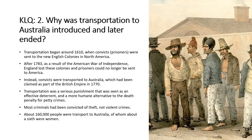After 1783, as a result of the American War of Independence, England lost these American colonies. America became independent of England and prisoners could therefore no longer be sent there. Instead, prisoners were transported to Australia, which had been claimed as part of the British Empire in 1770, meaning Britain considered itself to be in control of Australia.